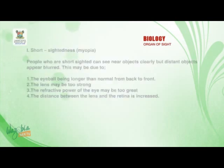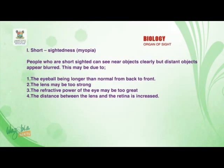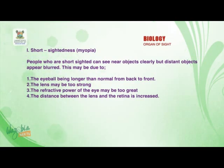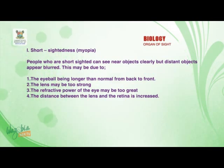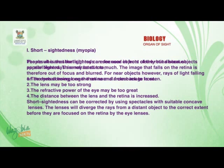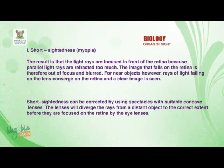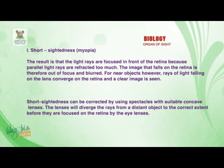Short-sighted people can see near objects clearly, but distant objects appear blurred. This may be due to: one, the eyeball being longer than normal from back to front; two, the lens may be too strong; three, the refractive power of the eye may be too great, increasing the distance between the lens and retina. The result is that light rays are focused in front of the retina. Short-sightedness can be corrected by using spectacles with suitable concave lenses.